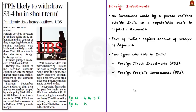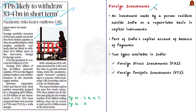The next discussion is based on a report by Swiss brokerage UBS Securities on foreign portfolio investments. Foreign portfolio investors have pulled out $2 billion from Indian equities due to concerns over rising COVID-19 cases, adversely affecting economic recovery. They are likely to withdraw $3 to $4 billion more in the short term. Foreign investment means investment made by a person resident outside India on a repatriable basis in capital instruments such as shares of an Indian company. Foreign investments are part of India's capital account of balance of payments.